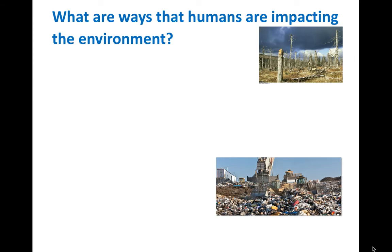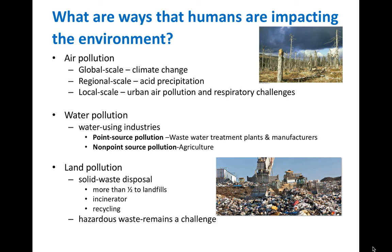So what ways are humans impacting the environment? This gets into the pollution aspect. There are three major ways: air pollution, water pollution, and land pollution. On a global scale, we're talking about things like climate change. On a regional scale, things like acid precipitation. And on a local scale, urban air pollution and respiratory challenges. It becomes more common in larger urban parts of the world — sometimes you hear in the news that air quality won't be great that weekend, so avoid strenuous outdoor activities.